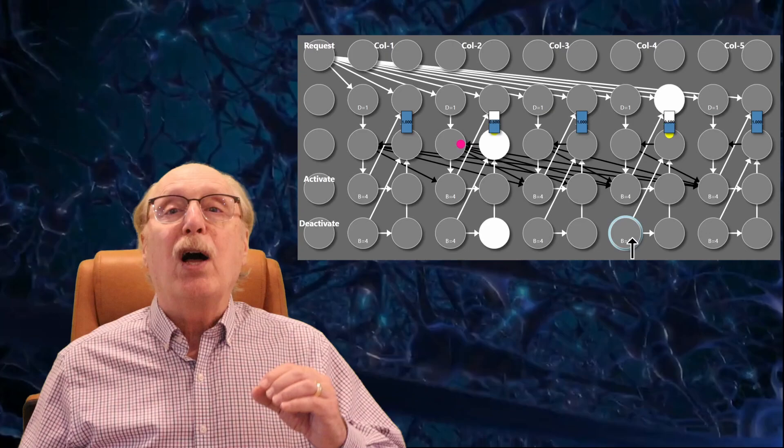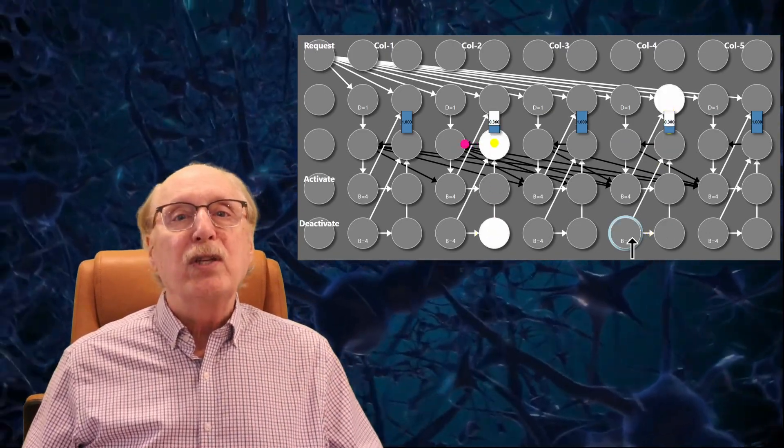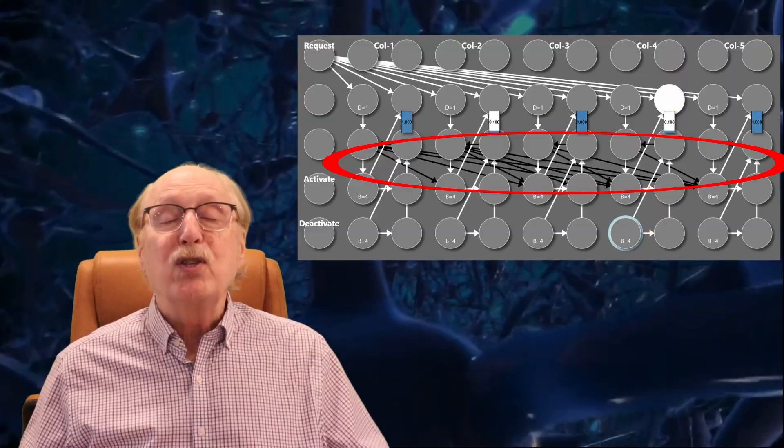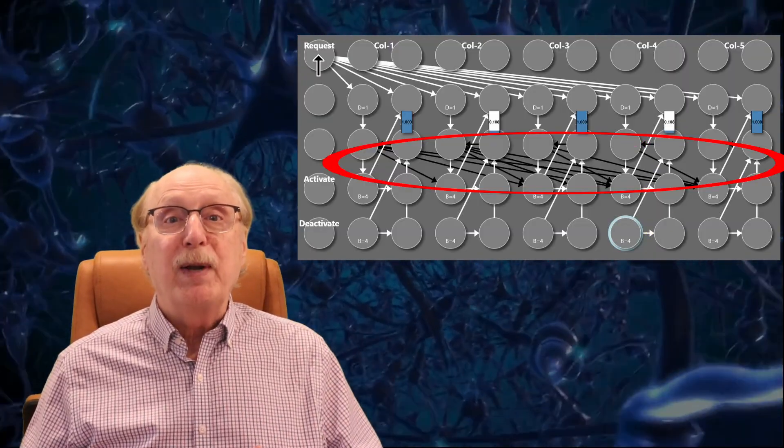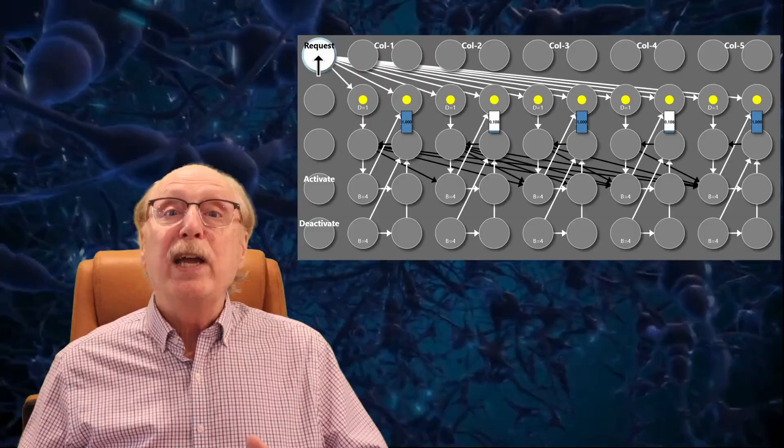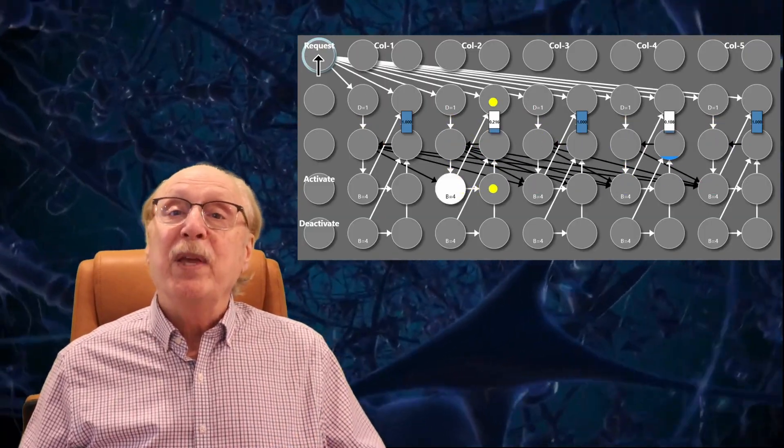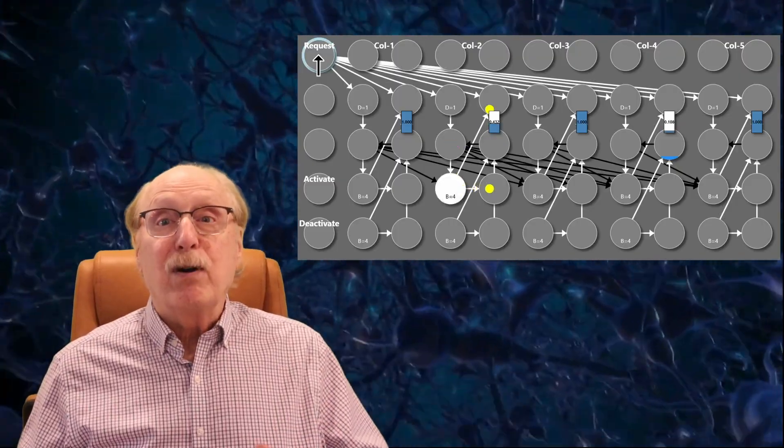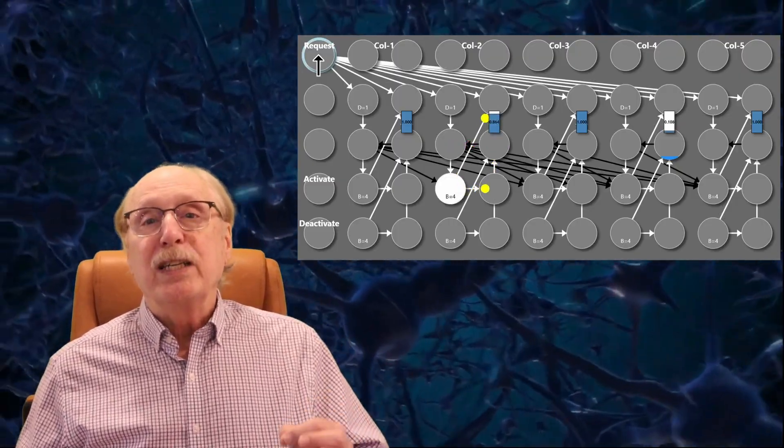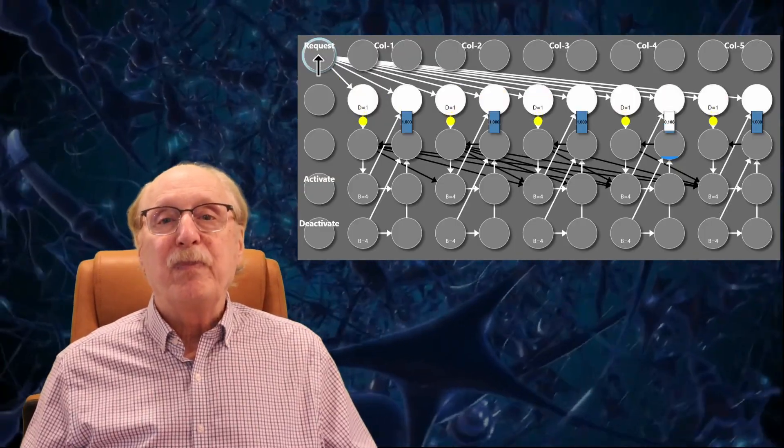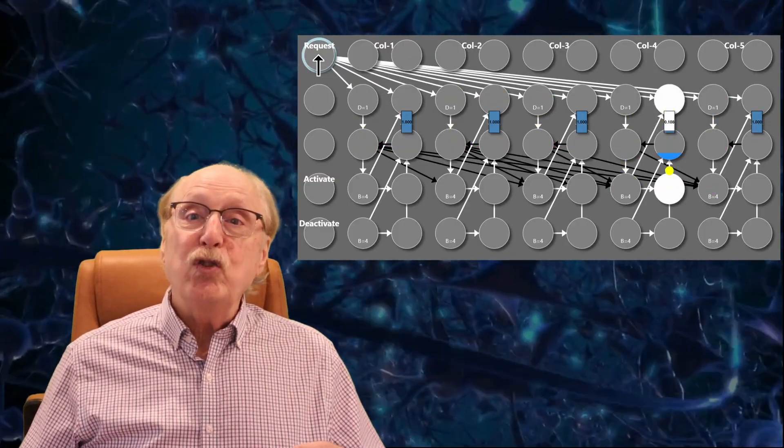Once that happens, the column immediately triggers a suppressive cascade, inhibitory synapses that block other columns from activating. That way, only the first available column is activated, even if several are technically free. It's fast, efficient, and biologically plausible.